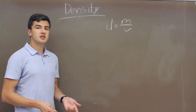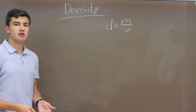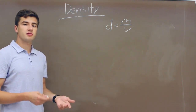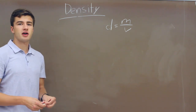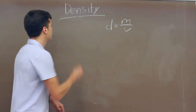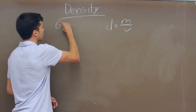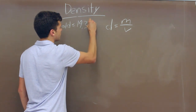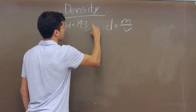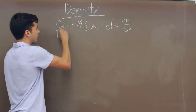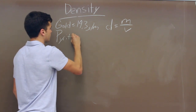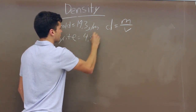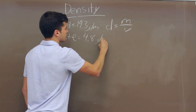Let's say we have an object that we think is gold but we're not sure. So we'll look up the density of gold, and we also think it could be fool's gold, which is pyrite, so we'll look up that density too. The density of gold is 19.3 grams per milliliter and the density of pyrite is 4.8 grams per milliliter.